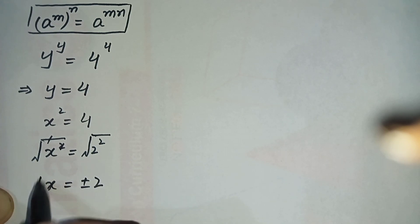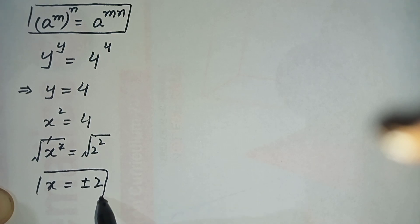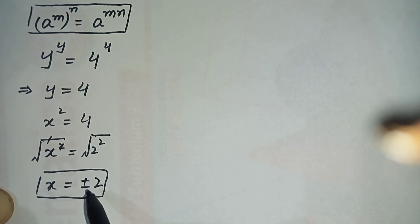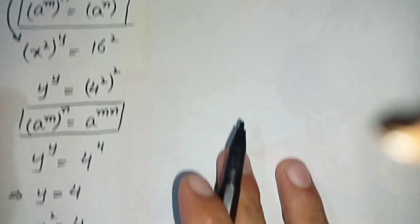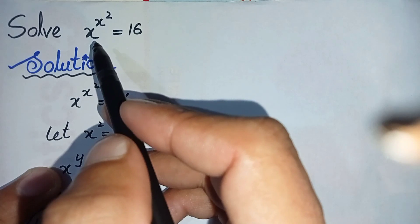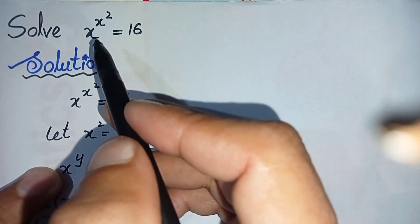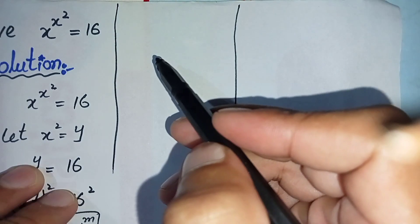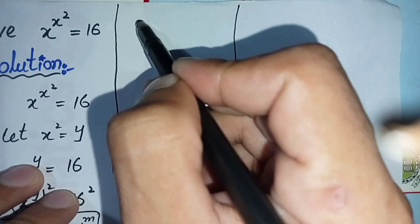The two possible roots are plus 2 and minus 2. We will now check whether x equals plus 2 and x equals minus 2 are the correct and exact roots of this exponential equation. First, we will check for x equals plus 2.